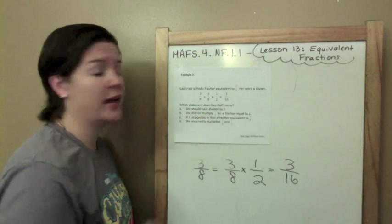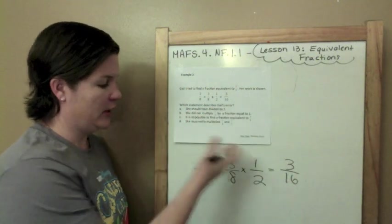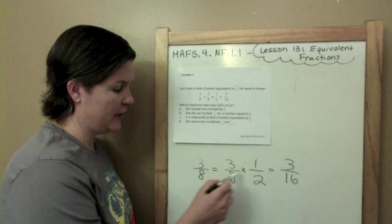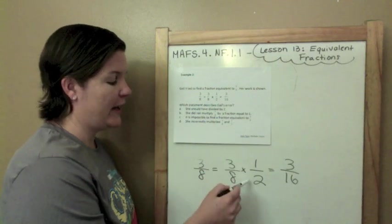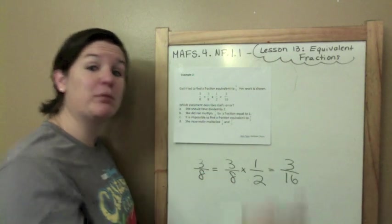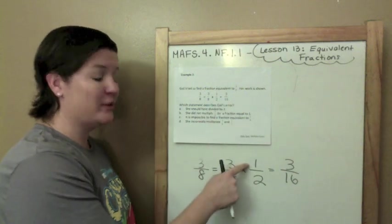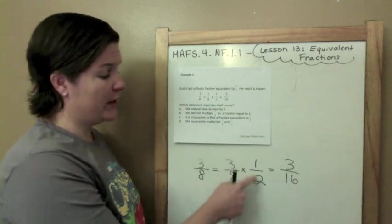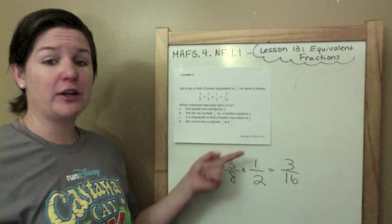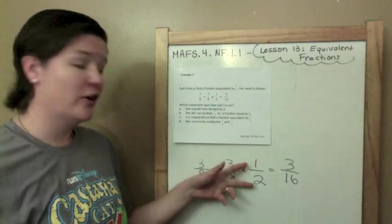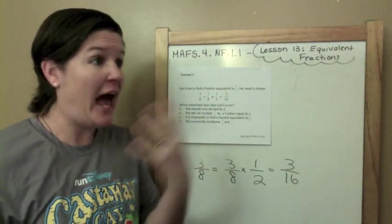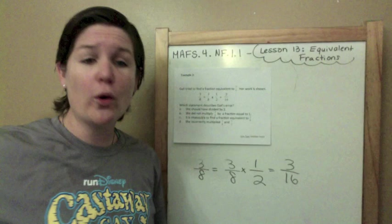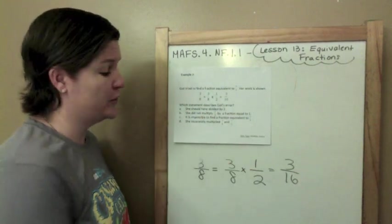And then she multiplied by 1 half to get 3 sixteenths. So she's claiming that 3 sixteenths is equivalent to 3 eighths, but it's not. We need to find her error. So which statement describes Gail's error? Okay, let's look at it, and then we'll try to find an answer that makes sense. So she took 3 eighths, and then she multiplied by 1 half. In the previous problem, example 2, we said that we have to multiply by a fraction that is equal to 1. Same number in the numerator, same number in the denominator. 1 half is not equal to 1. Half of a sandwich is not the same as a whole sandwich. Half of a chocolate bar is not the same as a whole chocolate bar.